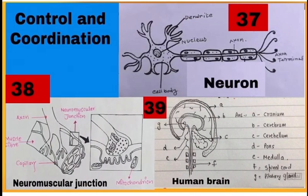37 is a structure of neuron. Note its parts: dendrites, cell body, nucleus, axon, and axon terminal.